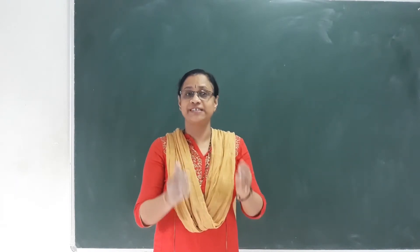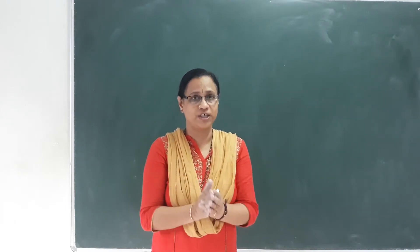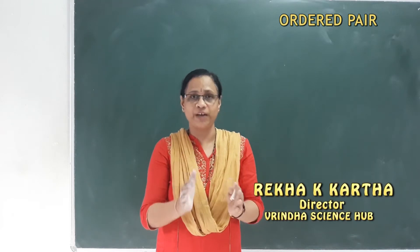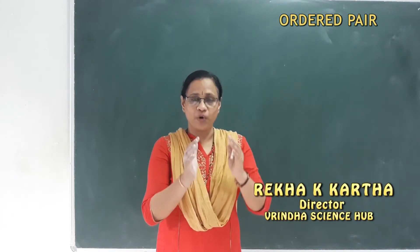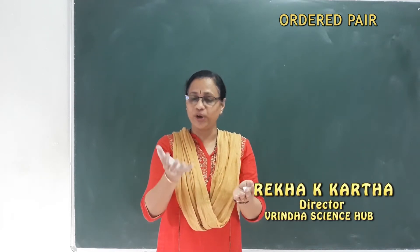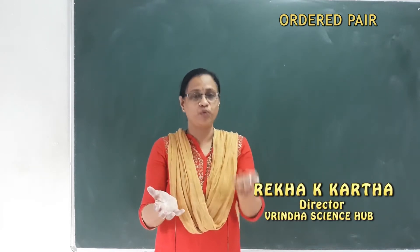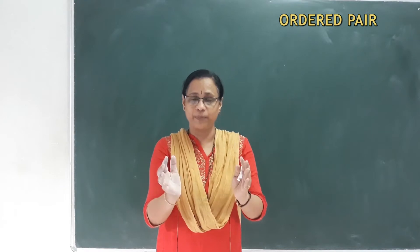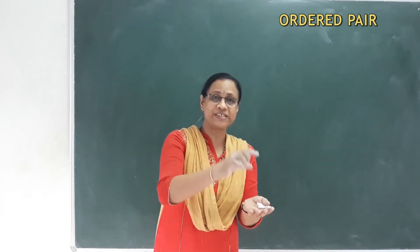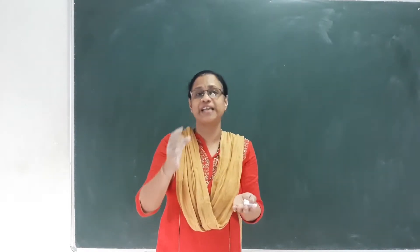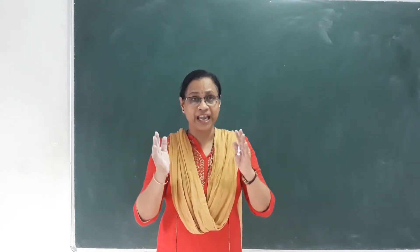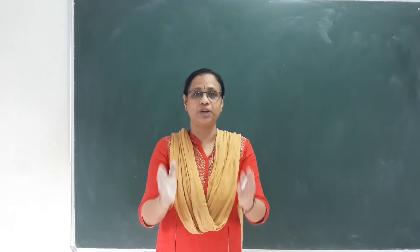What does it mean in relations and functions? The first topic is an ordered pair. An ordered pair is an x-value and y-value. It has a first component and a second component, and it's called A cross B.